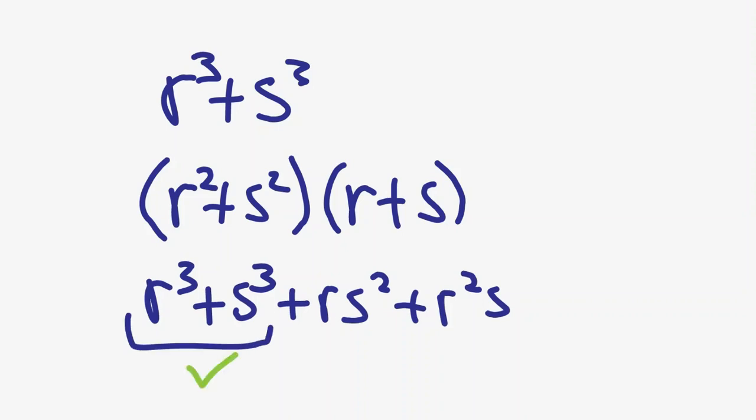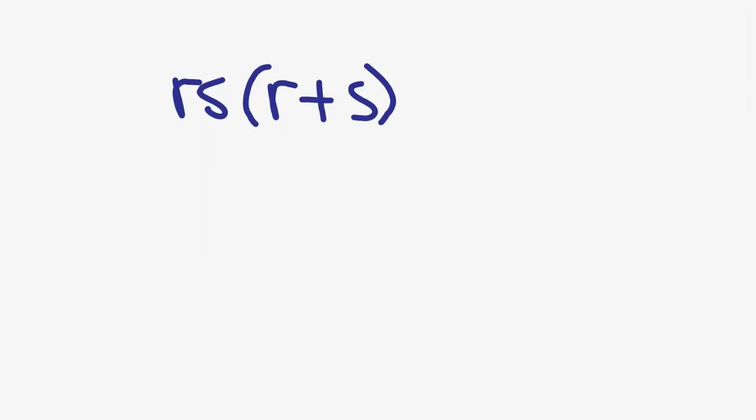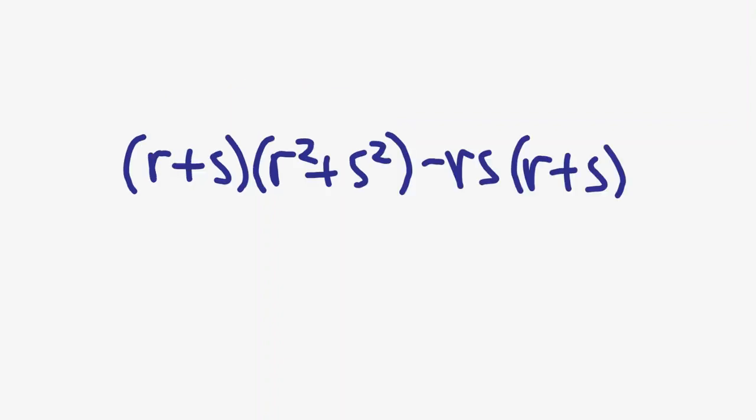We have the r³ + s³ part. We just want to get rid of rs² + r²s. Factoring rs² + r²s gives rs(r + s). We already know what rs and r + s are. This means we can write r³ + s³ as (r + s)(r² + s²) - rs(r + s).